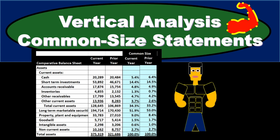In this presentation we will take a look at and work a problem related to vertical analysis, sometimes called common size statements. When we think about vertical analysis, we will be considering the analysis of the same period, as opposed to horizontal analysis where we're typically comparing period to period — one year compared to the next. In vertical analysis, we're comparing one year to itself.